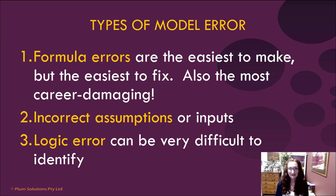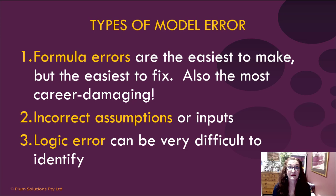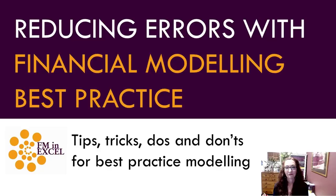Formula errors are the easiest to make, but they're also the easiest to fix. Secondly, incorrect assumptions or inputs — basically assuming the wrong thing, or the numbers going into the model being wrong — is a completely different type of error. It's about interpreting something incorrectly or using the wrong numbers. That's equally as horrifying. And lastly, a logic error can also be quite difficult to identify.